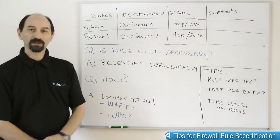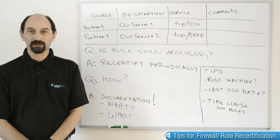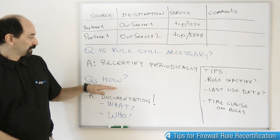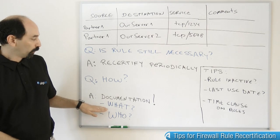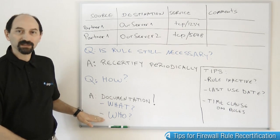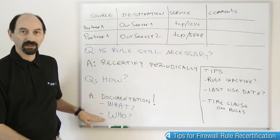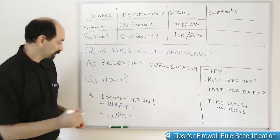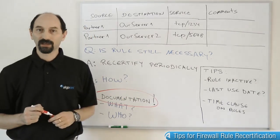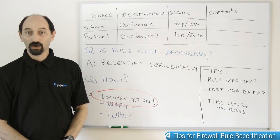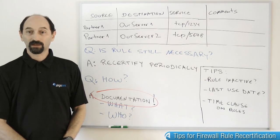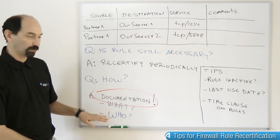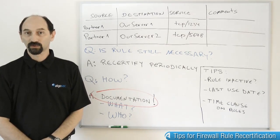Now, having a policy that requires you to recertify all the rules periodically does not mean it's easy. You need to be able to answer questions like: what is the rule there for, and who asked for it? Who is the business owner for that application? To be able to answer such questions, you need documentation — that is key. You need to have all your rules documented so that you can have a trail of breadcrumbs that will lead you to discover what the rule is for and who owns it when it comes time to recertify.